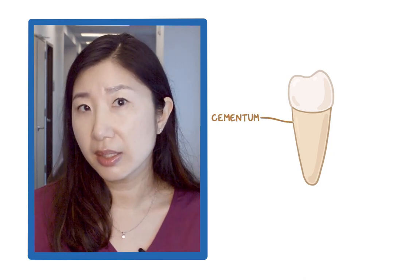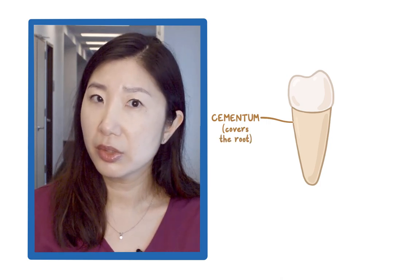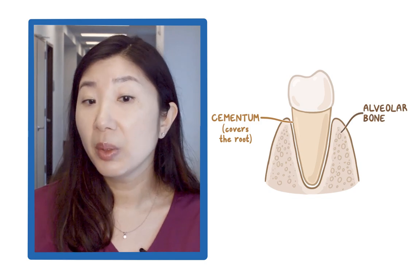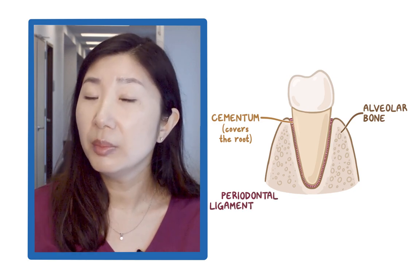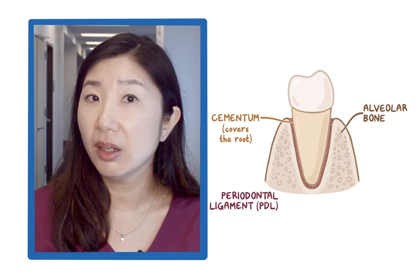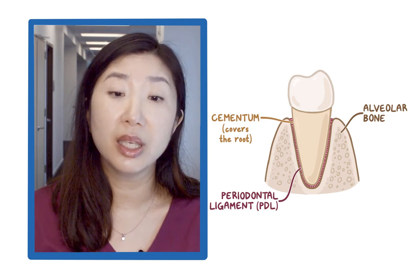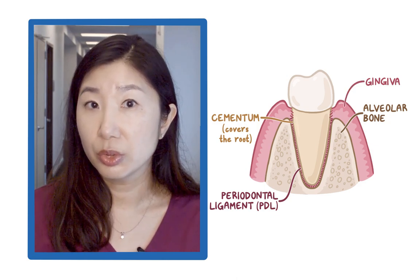Periodontal attachment are structures and tissues that surround the tooth and support its position. It is composed of cementum, which is a specialized calcified substance covering the root of a tooth and anchors the periodontal ligament; alveolar bone, which is a bone that contains the socket or dental alveoli; and periodontal ligament, commonly abbreviated as the PDL, which is a group of specialized connective tissue fibers that essentially anchors the tooth to the alveolus; and gingiva, or soft tissue attachment to the tooth.